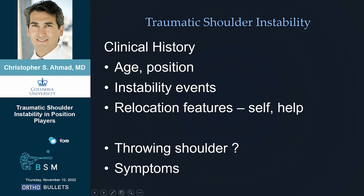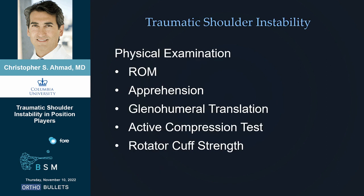When we evaluate and decide treatment, there are important features: How old is the patient? What's their position? How many instability events? Are they having instability in the past? How easily did it relocate — did they need help, did they go to an emergency room or just go back in on their own? And of course the biggest one: is it their throwing shoulder? The throwing shoulder is under so much stress that it's going to make recovery harder.